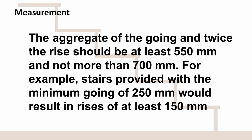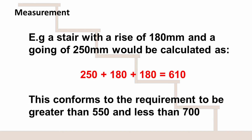Another check we need to do on stairs is an aggregate measurement. The going plus twice the rise should be at least 550mm and no more than 700mm. For example, a stair with a minimum going of 250mm would result in rises of at least 150mm. As another example, a stair with a rise of 180mm and a going of 250mm gives 250 plus twice 180, which equals 610 — within the 550 to 700mm range. This is a check measurement we do when thinking about stair design.